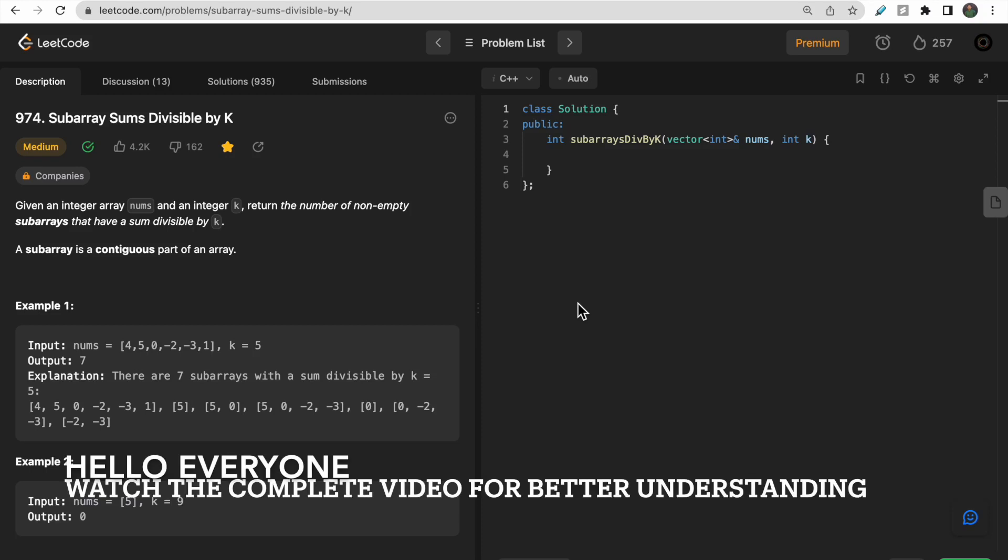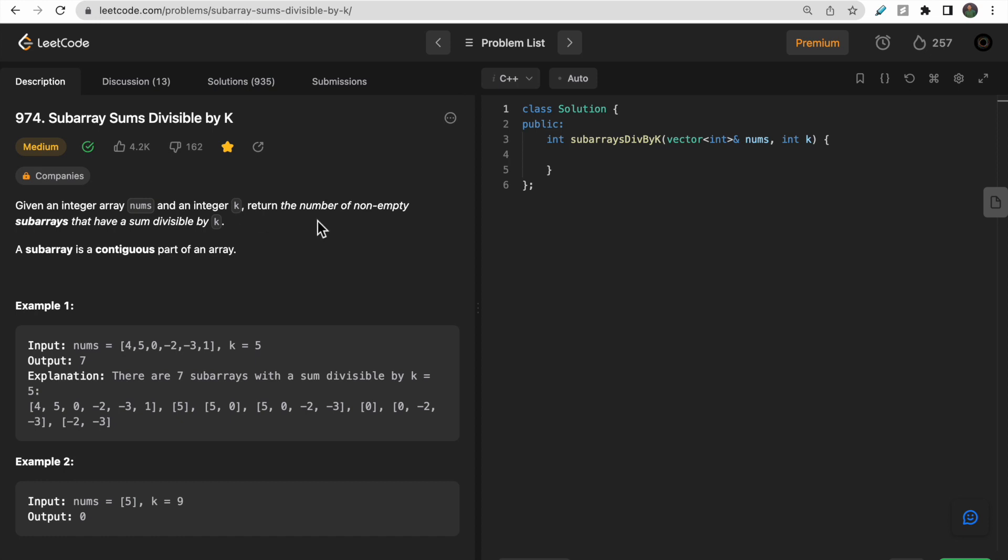Hello guys, welcome to Deep Codes. In today's video we will discuss LeetCode question 974 that says Subarray Sums Divisible by K. Here we are given an integer array nums and an integer k, and we need to return a non-empty subarray that has sum divisible by k. A subarray is a contiguous part of an array.